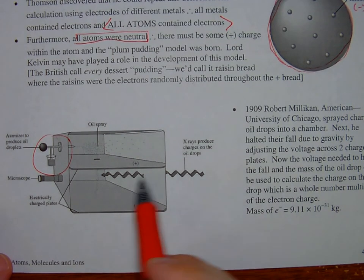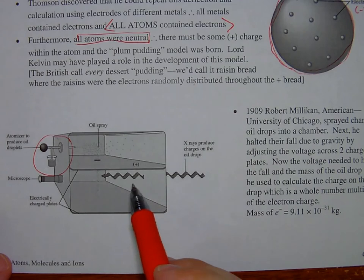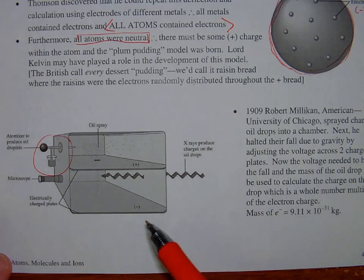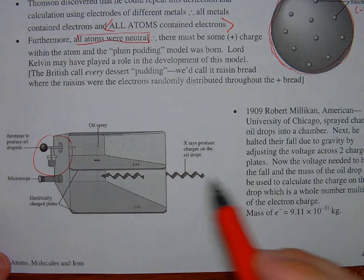Remember, he was charging these oil droplets using x-rays, he just didn't know what the charge was. He would use this balance between a voltage that he knew - because he put the voltage to these two plates - he used the voltage on these two plates to figure out the charge on this thing that he didn't know.